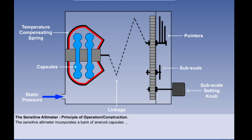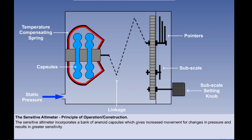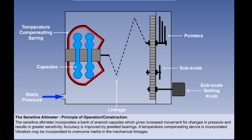The sensitive altimeter uses essentially the same principle of operation as the simple altimeter, but incorporates some additional refinements. The single aneroid capsule of the simple altimeter is replaced with a bank of two or sometimes three aneroid capsules. The combination of capsules gives increased movement for changes in pressure and this makes the instrument more sensitive to small changes in altitude. Accuracy is also improved by the use of jeweled bearings in the mechanical linkages which reduces friction. A temperature compensating device is incorporated which minimizes the errors caused by expansion and contraction in the linkages.